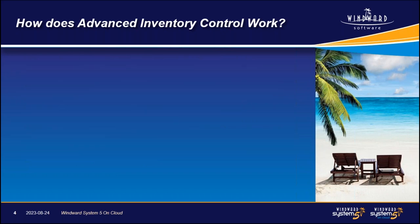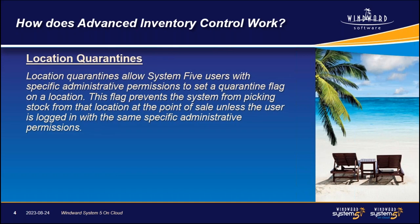Location quarantines allow System 5 users with specific administrative permissions to set a quarantine flag on a location. This flag prevents the system from picking stock from that location at the point of sale unless the user is logged in with those same specific administrative permissions. Quarantine locations are intended for stock that cannot be sold until some action is taken — typically used for returns that need to be repackaged, inspected, and deemed safe. They can also be useful for stock that has been pre-sold or put on hold for a customer.